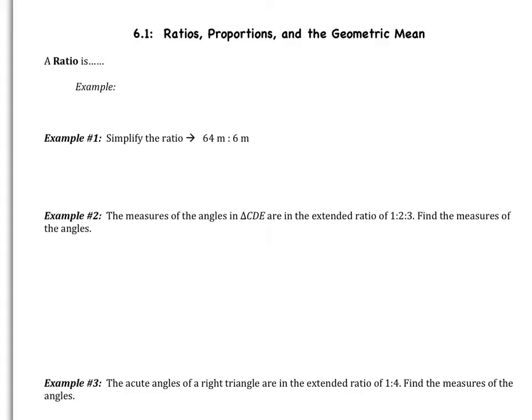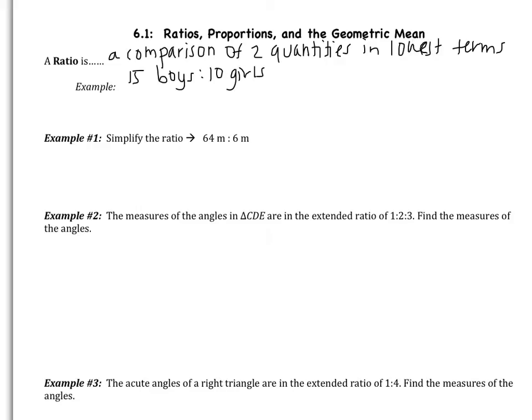Ratios and proportions should be a review. So let's jump right in. A ratio is a comparison of two quantities, always expressed in lowest terms. For example, there could be 15 boys in the class but only 10 girls. This has to be in lowest terms, so I divide both 15 and 10 by 5. This gives me the ratio of 3 to 2. So for every three boys in the class, there's two girls.